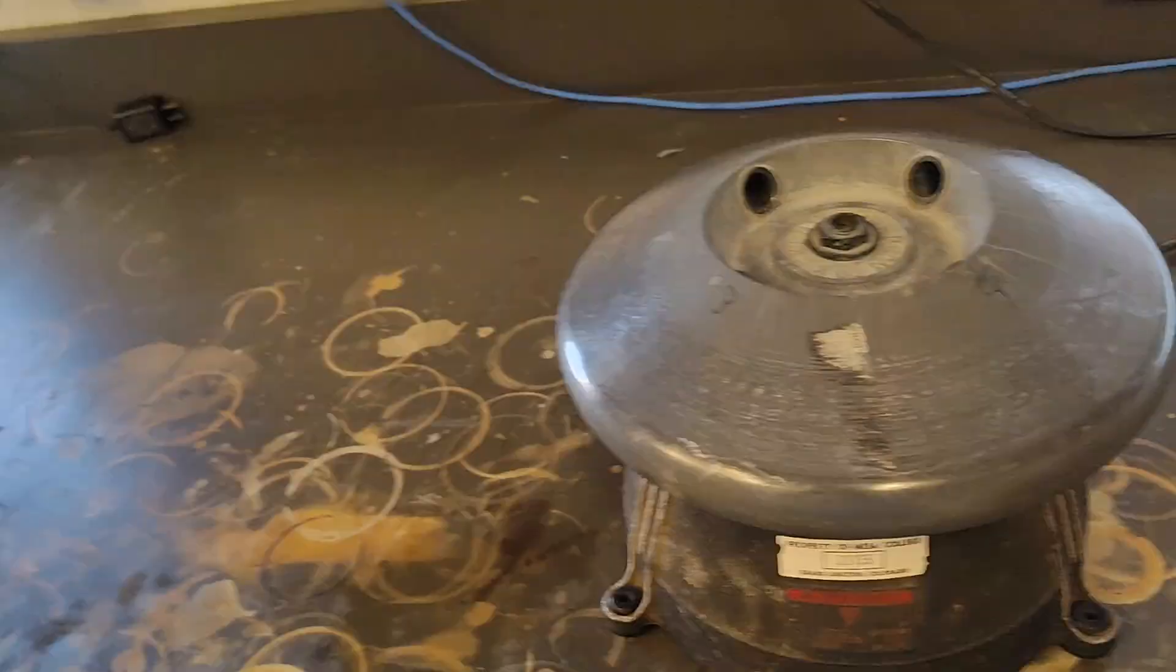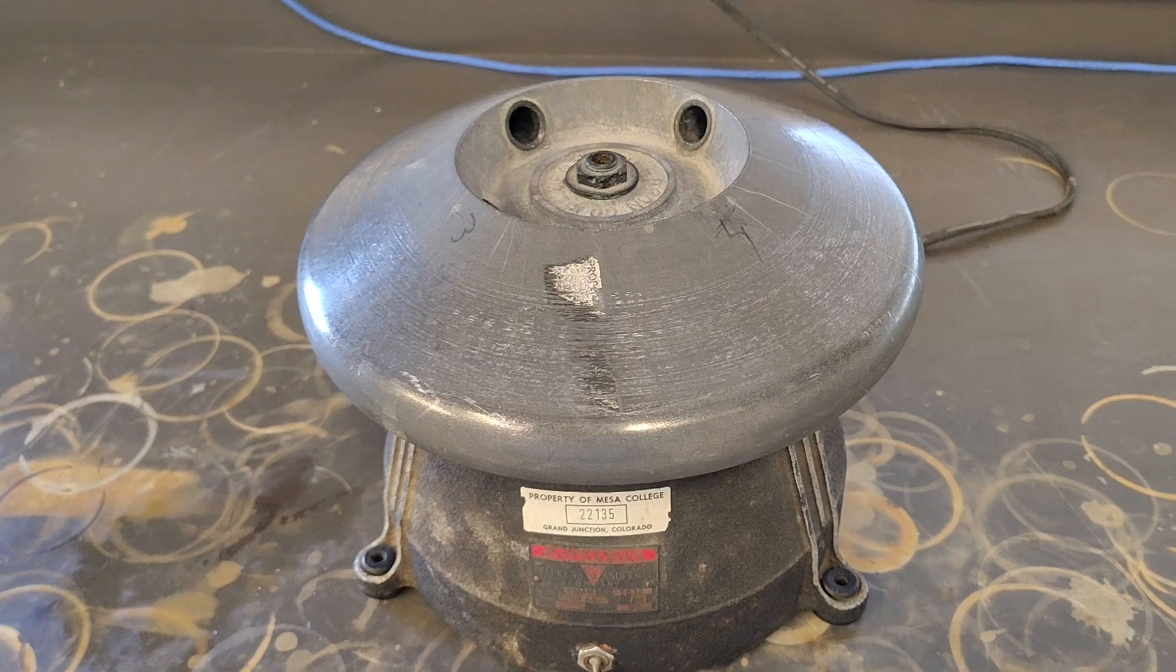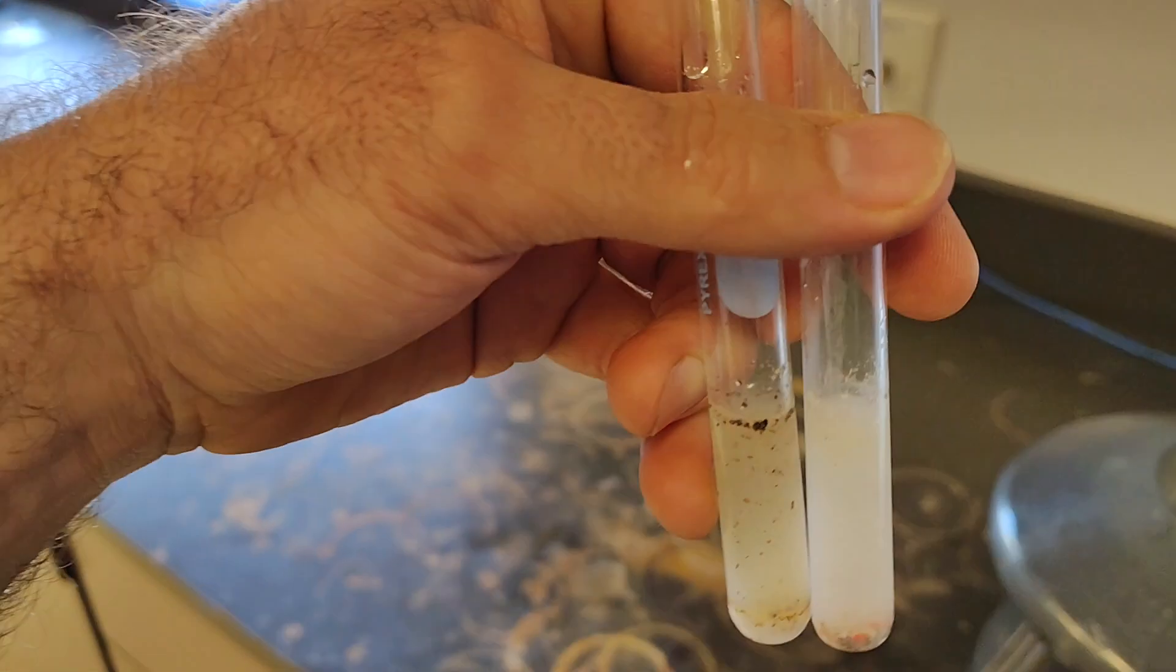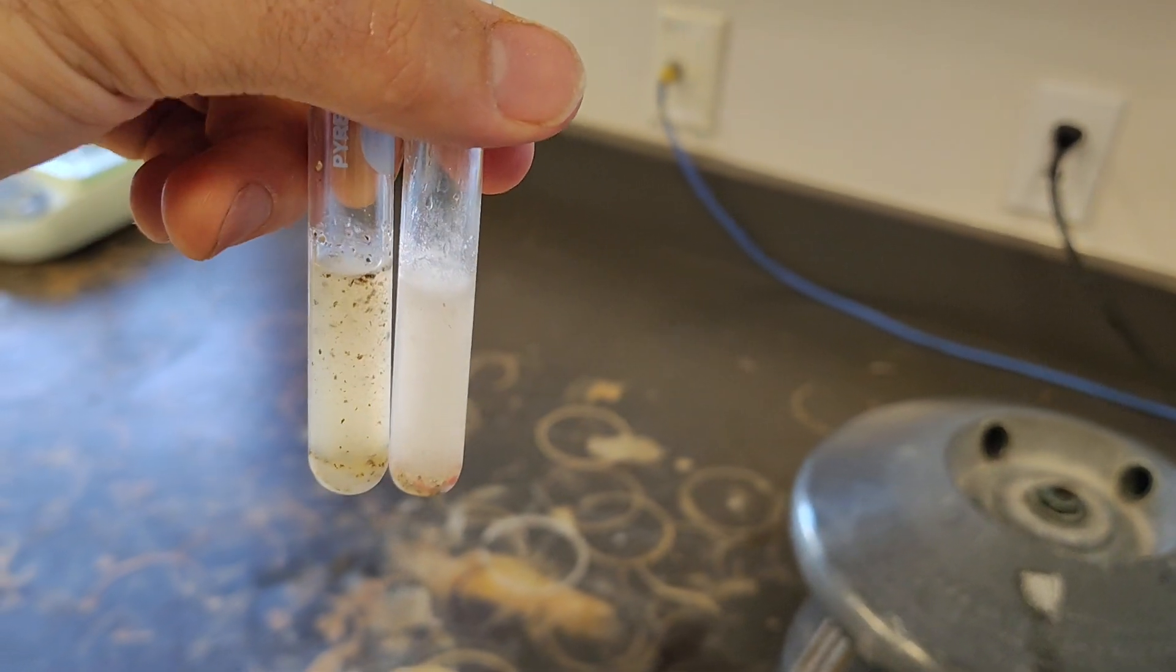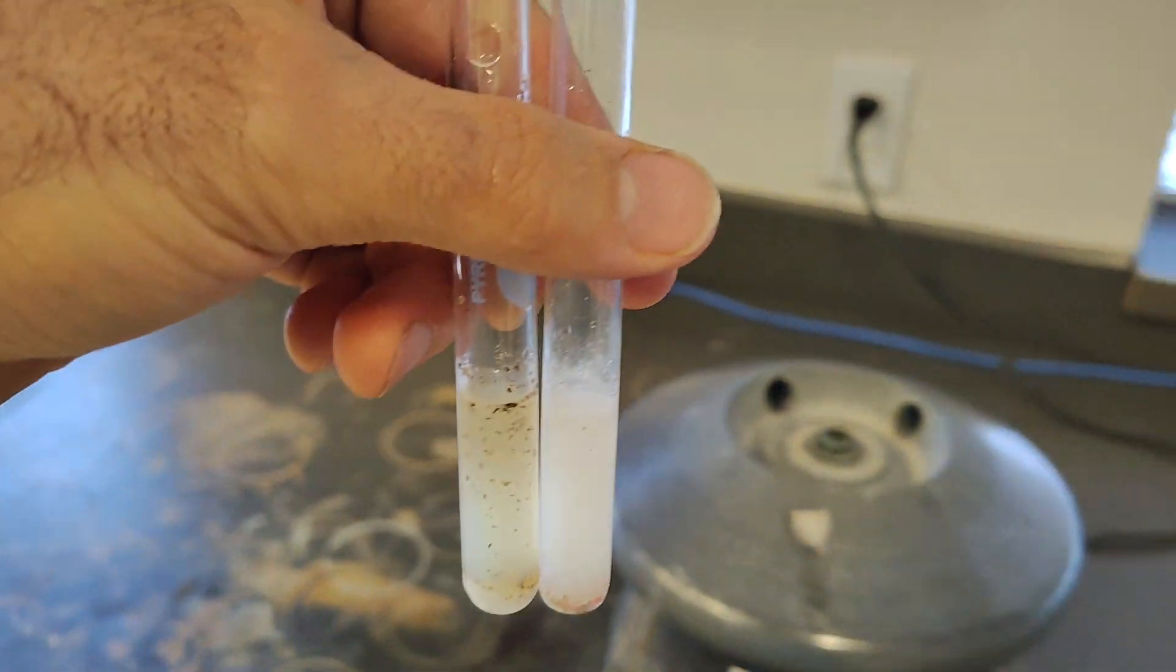Good afternoon class. What I wanted to do today was make a video on this machine right here. This is a centrifuge, and when you have a solution that's kind of murky like this and you want to separate things, you use the centrifuge.